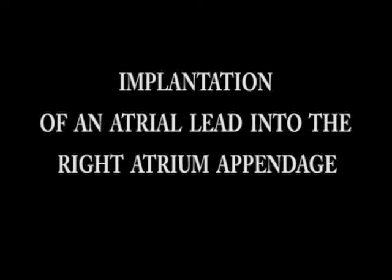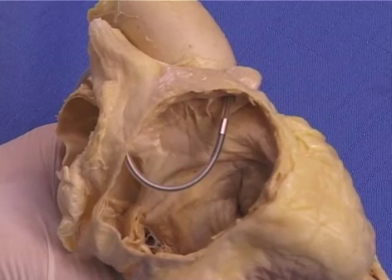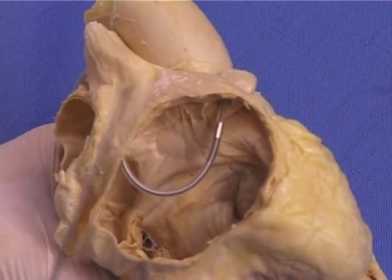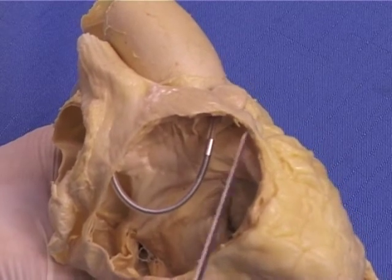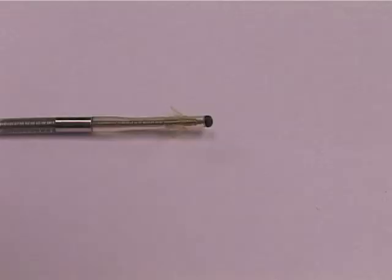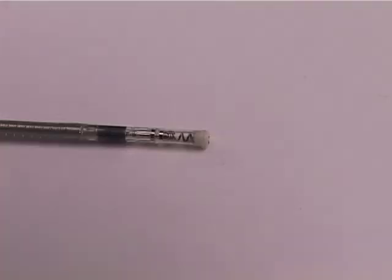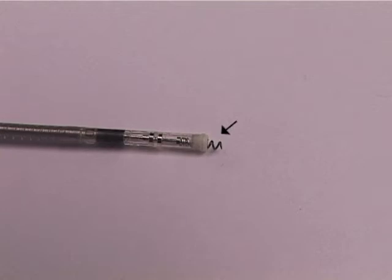Now we will look at the technique of lead implantation in standard and alternative positions while performing permanent pacing. Implantation of an atrial lead into the right atrium appendage. Traditionally, the atrial lead has been inserted into the distal part of the right atrium appendage between the pectinate muscles. The lead with passive fixation clutches the pectinate muscles with special tines, while active fixation of the lead is provided with a spiral helix.